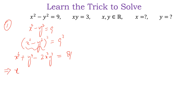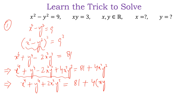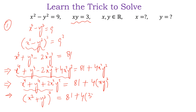Then we add 4x squared y squared on both sides. We can simplify this and write x to the power 4 plus y to the power 4 plus 2x squared y squared is equal to 81 plus 4 times (xy) squared. Since xy equals 3, this becomes 3 squared.